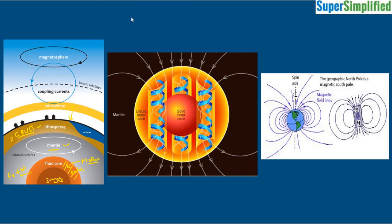In the atmosphere we have the troposphere, then the stratosphere, then the mesosphere, and above the mesosphere is the ionosphere. So these are the four layers of the atmosphere.